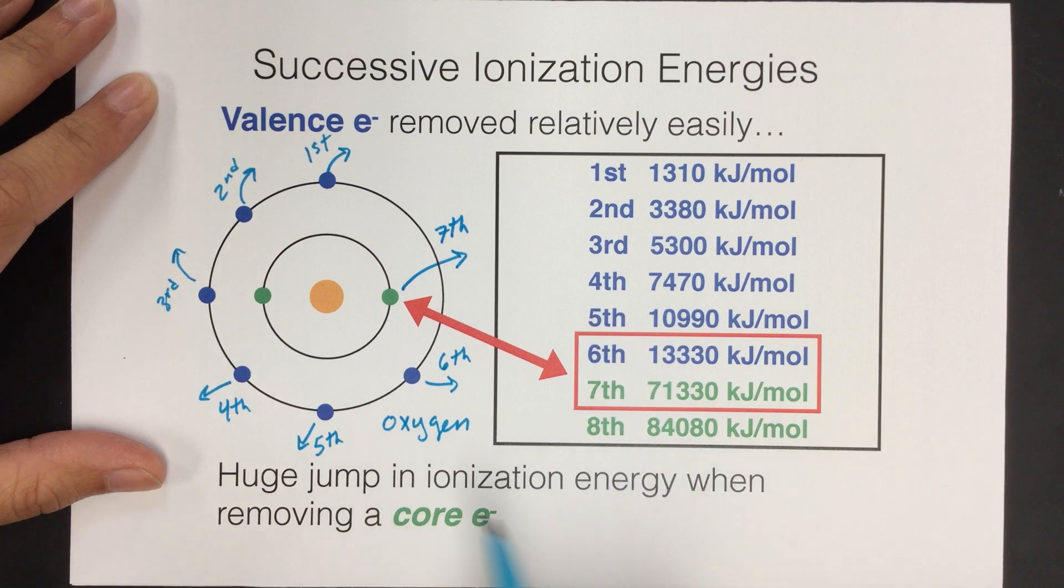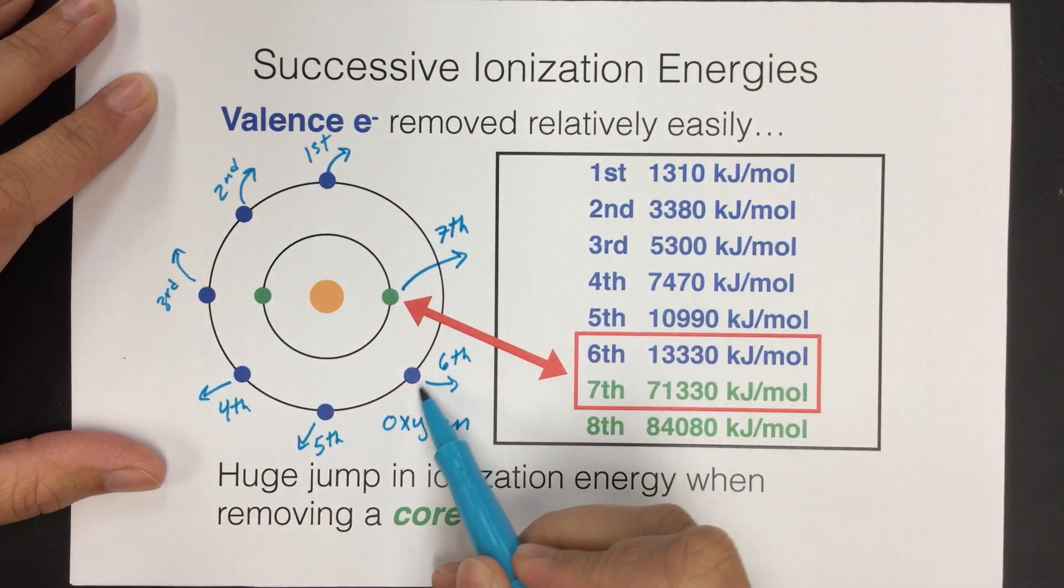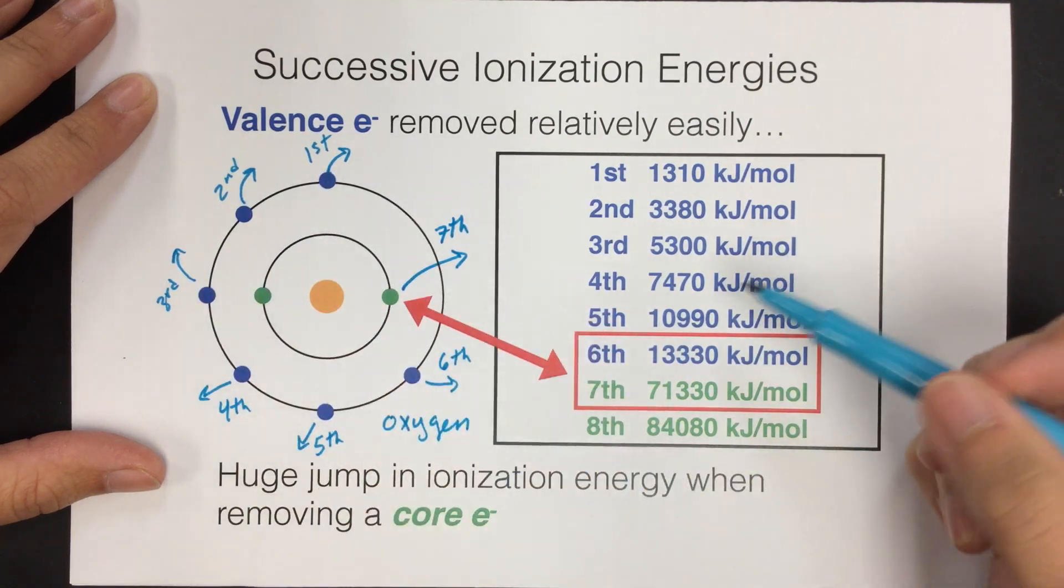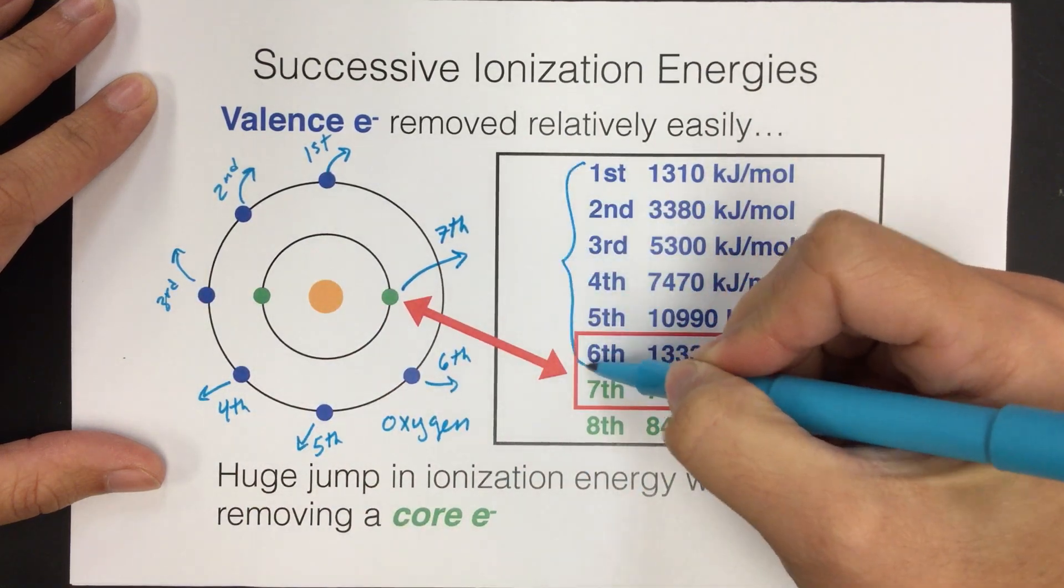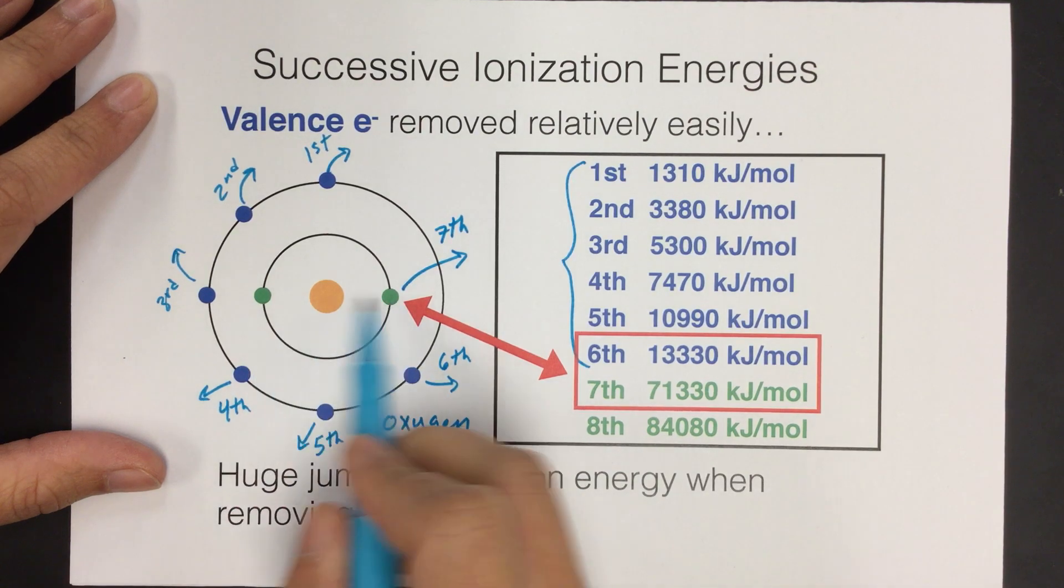And the reason there's such a big jump is because now we've removed all of the valence electrons. Remember, valence are the outermost energy level electrons. Once we've removed all of those, we are now reaching into core electrons. These green ones are the core electrons.